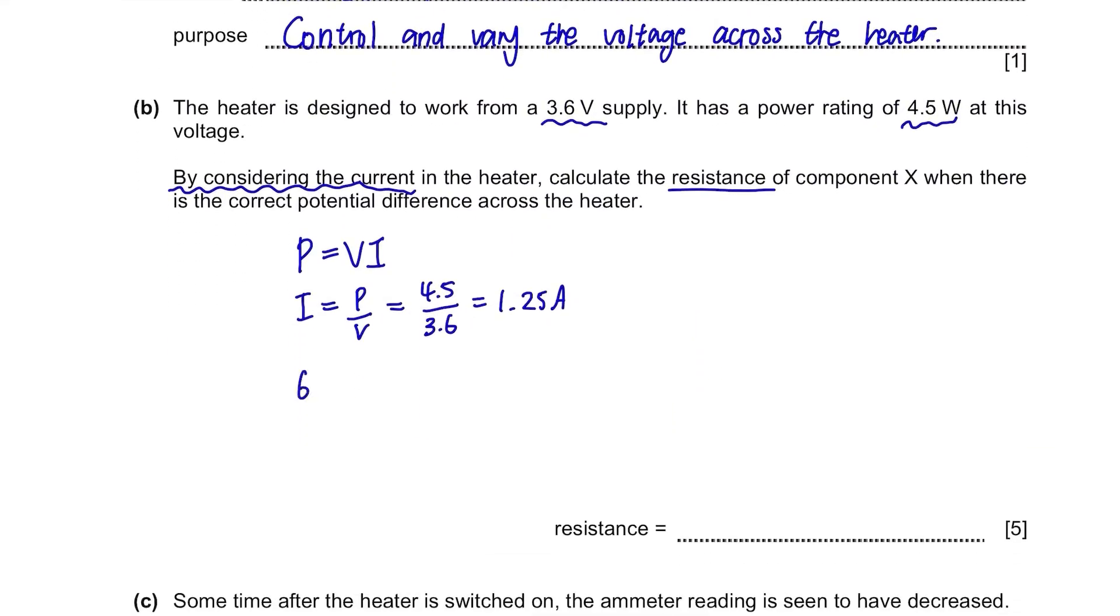This is because voltage is shared in a series circuit. So 6 minus 3.6 is 2.4V at X. So to find the resistance, use V equals IR, change it to R equals V over I. It's 2.4 divided by 1.25, and the answer is 1.92 ohms rounded to 3 significant figures.